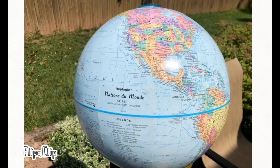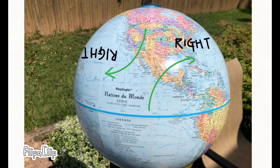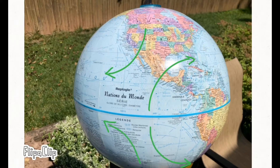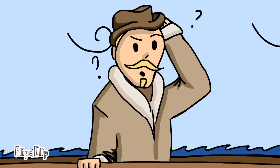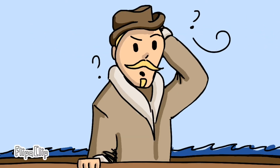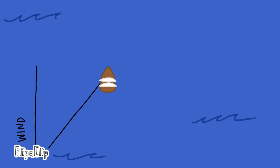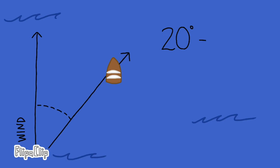But what does this have to do with Ekman Transport? Well, because of the Coriolis effect, in the northern hemisphere, moving objects are deflected to the right, and in the southern hemisphere, they're deflected to the left. So that explorer kept moving to the right of the wind direction because of the Coriolis effect.